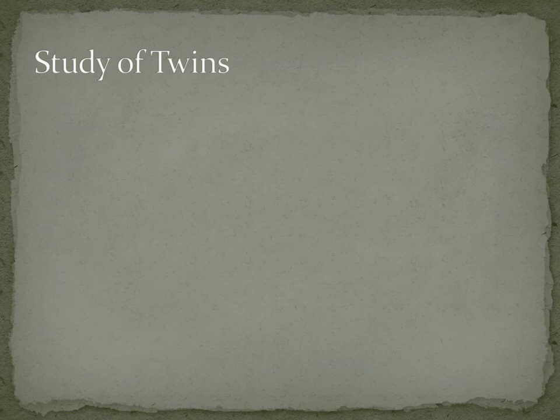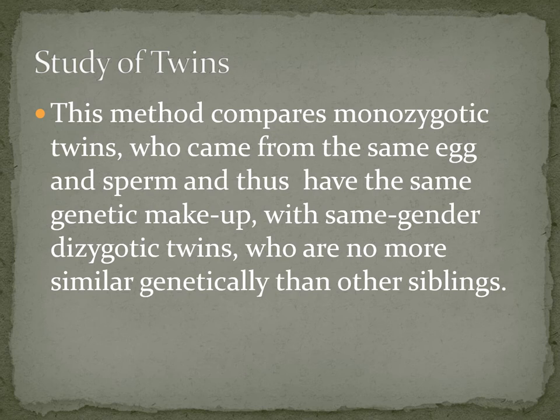Another method to show the influence of nature and nurture is twin studies, which compare monozygotic twins and dizygotic twins. Monozygotic twins come from the same egg, fertilized by one sperm. During the fertilization process, the fertilized egg splits into two, forming monozygotic twins, which means the twins share the same genetic makeup.